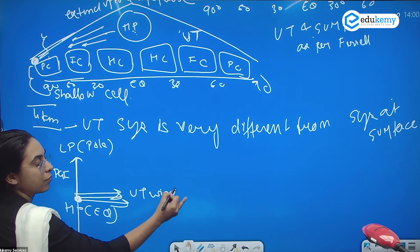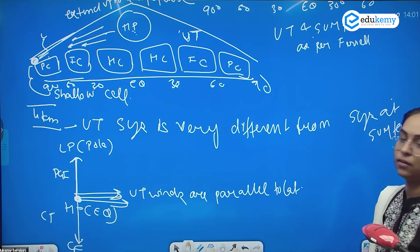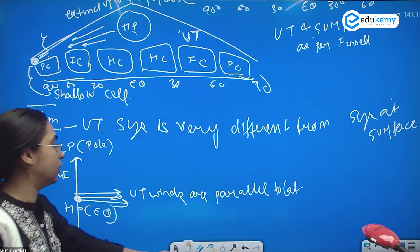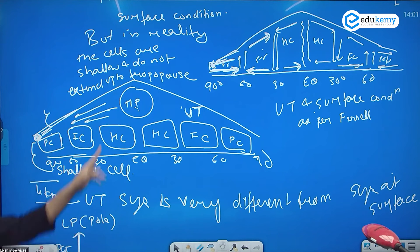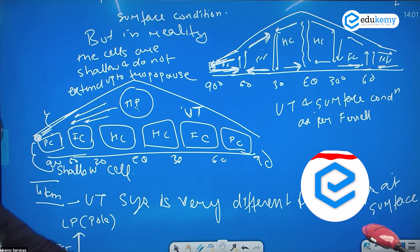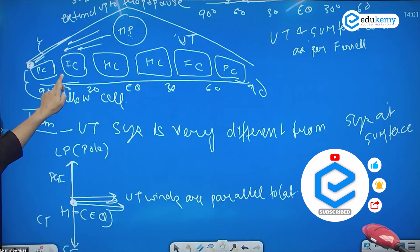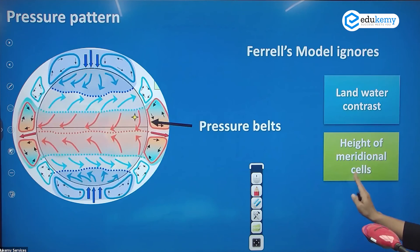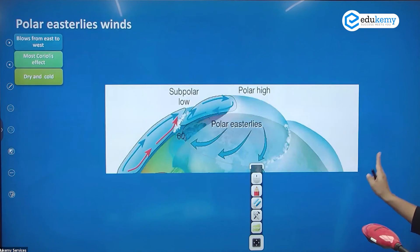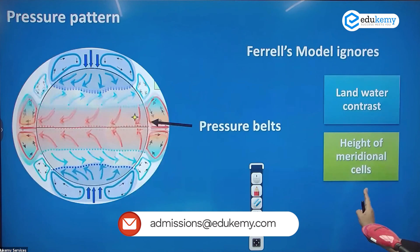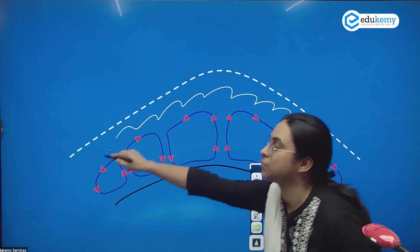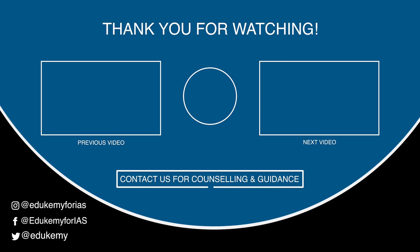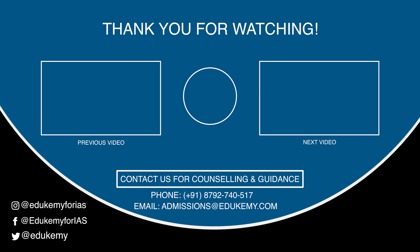So, upper tropospheric winds move parallel to the latitudes. The cells are very shallow and do not extend to great height. The upper tropospheric conditions are very different from the conditions at the surface. Peril says the cells extend up to the entire troposphere, but in reality the cells are very shallow and a completely different system is taking place at the upper troposphere.